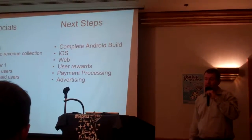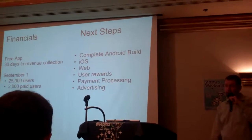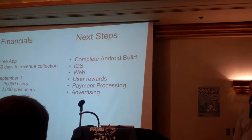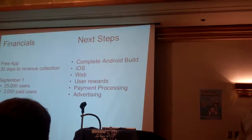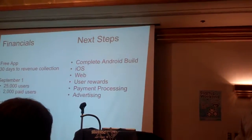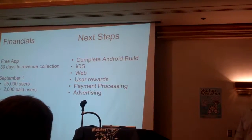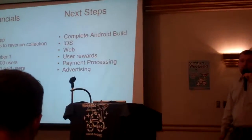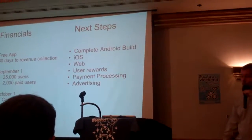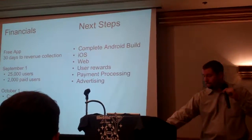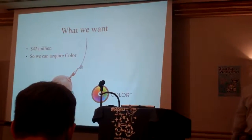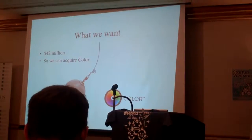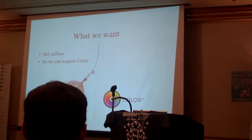Next steps are to finish the Android build, which is very nearly done, complete the iOS and web versions, implement user rewards and payment processing through both PayPal and in-app purchase on iOS and Android, and connect with advertisers — which we think will be essential for the rewards program. And finally, what we want from you is 42 million dollars so we can acquire Color. With that, we'll answer any questions.